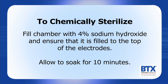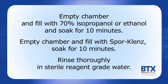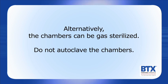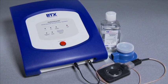To chemically sterilize, fill the chamber with 4% sodium hydroxide and ensure that it is filled to the top of the electrodes; allow to soak for 10 minutes. Empty the chamber and fill with 70% isopropanol or ethanol and soak for 10 minutes. Empty the chamber and fill with spore cleanse; soak for 10 minutes. Rinse thoroughly in sterile reagent-grade water. Alternatively, the chambers can be gas-sterilized. Do not autoclave the chambers. This concludes the setup and video training for the HYBRAMUN system.